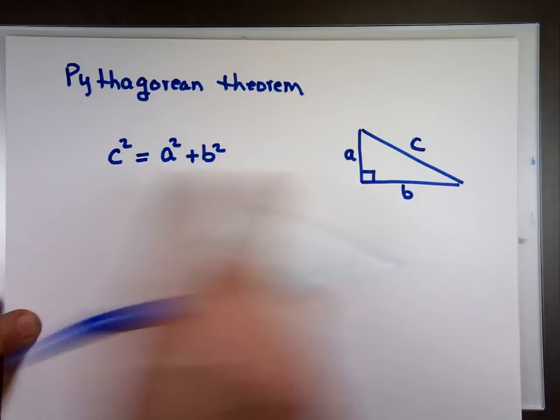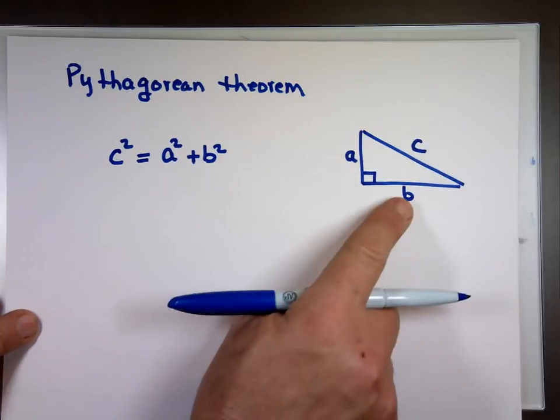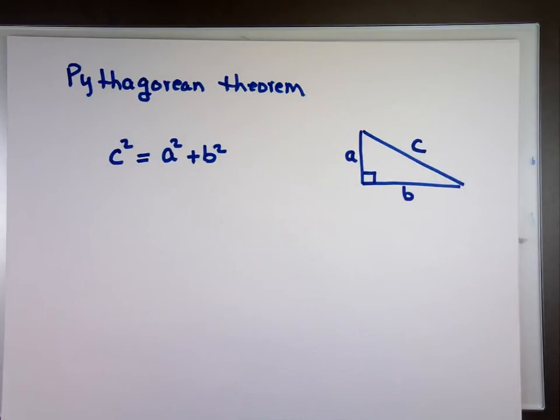That's only true if you have a 90 degree angle. Only. The only time this one squared will equal this one squared plus that one is when you have a 90 degree angle. C is the hypotenuse.